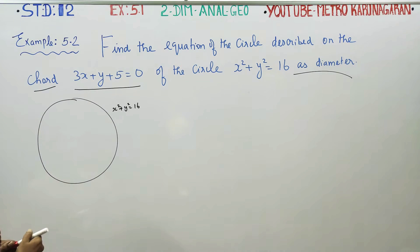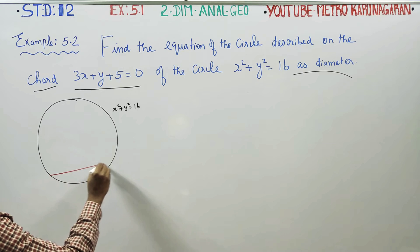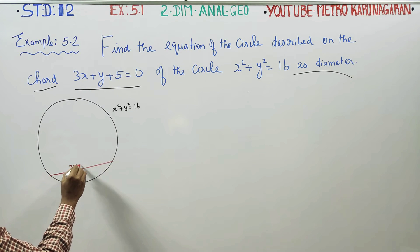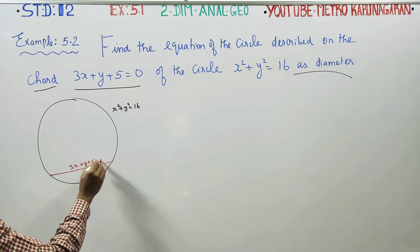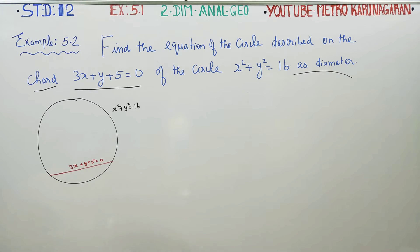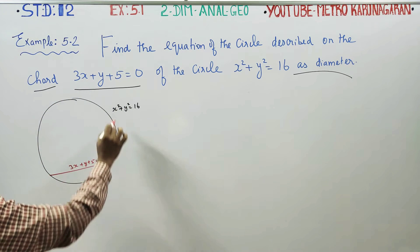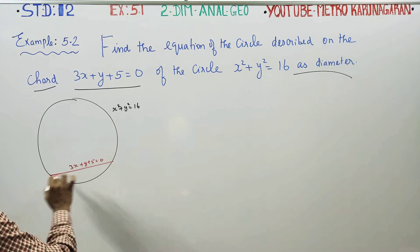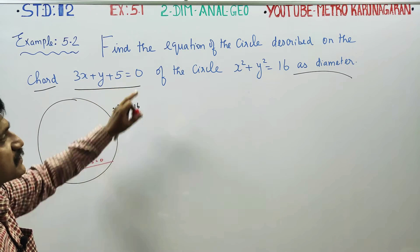This is the black color circle: x² + y² = 16. That is one chord. The chord equation is 3x + y + 5 = 0.